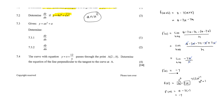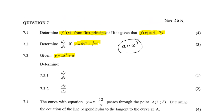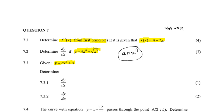Question 7.3 gives y equals ax squared plus b. Question 7.3.1 asks us to determine dy/dx. This is simply applying the power rule — we're finding the derivative of y with respect to x. We get a times 2 times x to the exponent (2 minus 1), plus the derivative of b which is a constant, so that's 0. Therefore dy/dx equals 2ax.